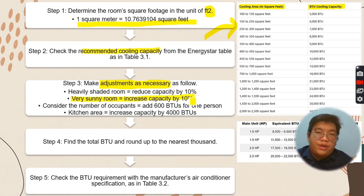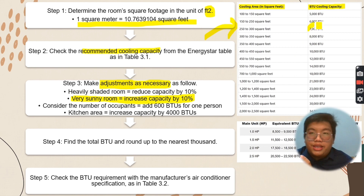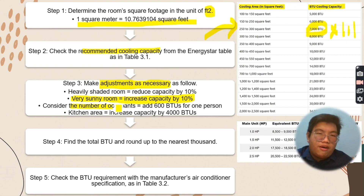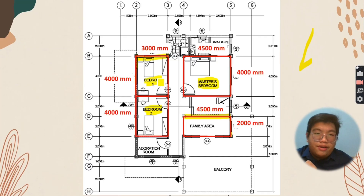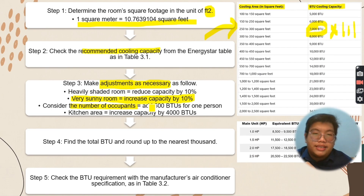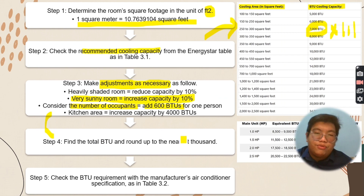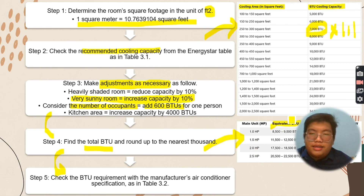In our case, I assume it is a very sunny room, so we need to increase the capacity by 10%, meaning we multiply the BTU cooling capacity — for example, 7,000 BTU — by 1.1. I also consider the number of occupants: for bedrooms and master bedroom it is 2, and for the family area it is 5, so we adjust by adding 600 BTU per person. After that, we apply the total BTU and round up to the nearest 1,000, then check the BTU requirement from the table.